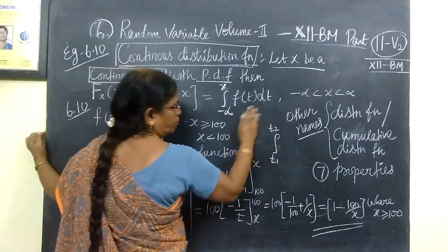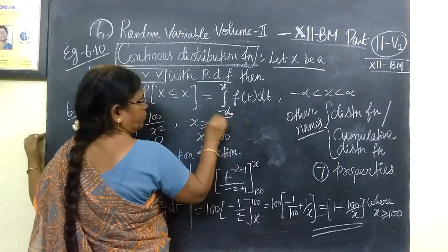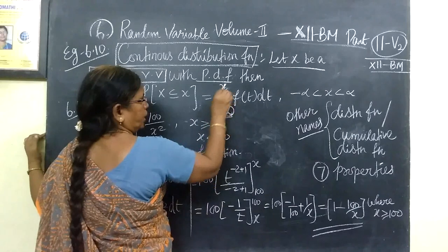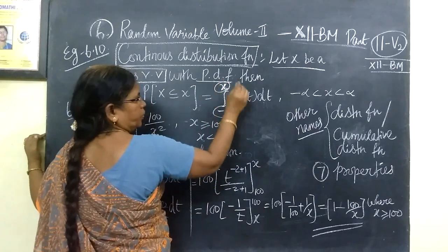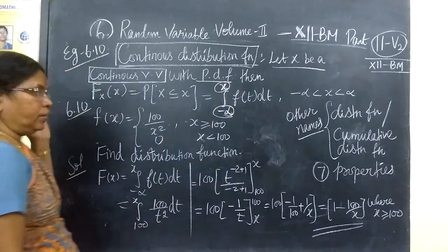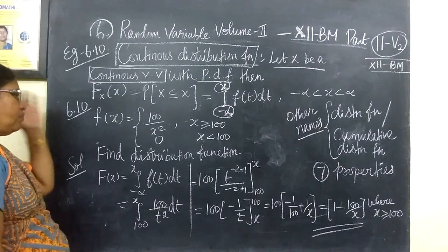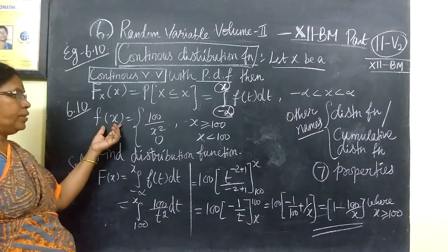The definition of the continuous distribution function is the integral from minus infinity to x. This is the definition of theta. So, this is the sum of f of x.